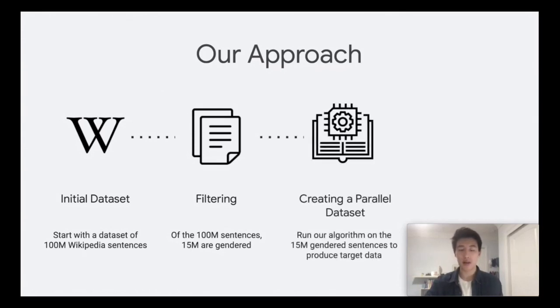Then, we ran an algorithm on these 15 million gendered sentences to produce target data and create our parallel dataset, where we have gendered sentences from Wikipedia on the source side and gender-neutral sentences from our algorithm on the target side. With this, we can train our model.